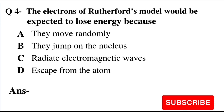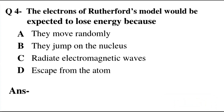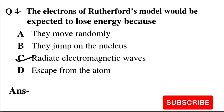So here we are asked why electrons in Rutherford's model lose energy. The electrons, because of their circular motion, radiate electromagnetic waves and thereby lose energy. So option C — radiate electromagnetic waves — will be the right answer.